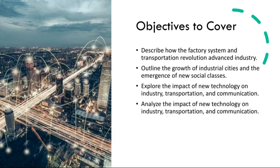With the rise of factories and urbanization, new social classes emerged. The industrial bourgeoisie, composed of factory owners and entrepreneurs, gained wealth and influence. Meanwhile, the industrial proletariat, comprising factory workers and laborers, faced harsh working conditions, long hours, and low wages, and this led to the development of a stark social divide between the haves and the have-nots.